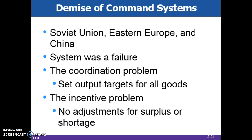Failures along the supply chain were common because one factory's output was another factory's input — a failure at any step along the way would cause a chain reaction. This became more difficult as the economies grew. There were no indicators of success like profit or loss to indicate how successful a business firm is, and so low quality products became the norm.